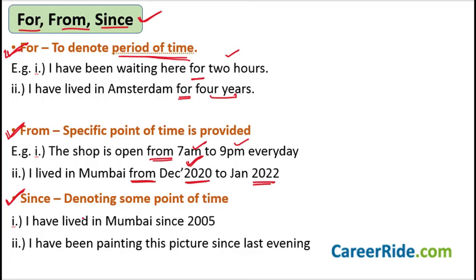'Since' — which you usually confuse with 'from' — also denotes some specific point of time. 'I have lived in Mumbai since 2005' — a specific year is given. I'm not saying randomly four years or two years; I'm saying 'since 2005.' There is a specific point of time. Similarly, 'I have been painting this picture since last evening' — there is a specific point of reference provided. Make sure you pause the video and review this, because this concept is really important for exams.